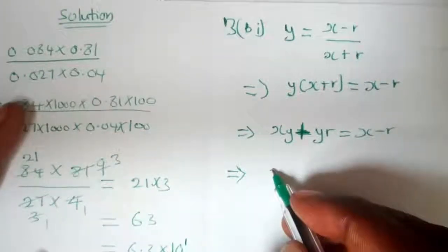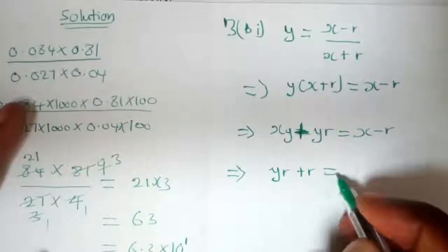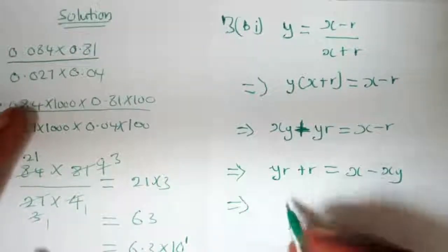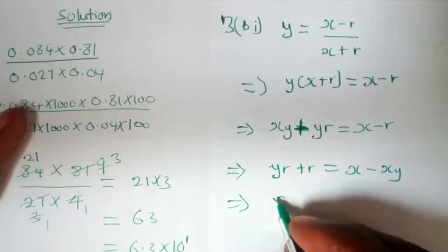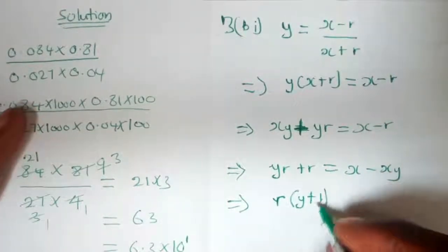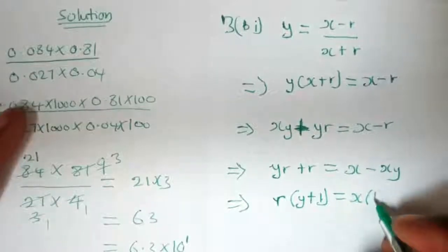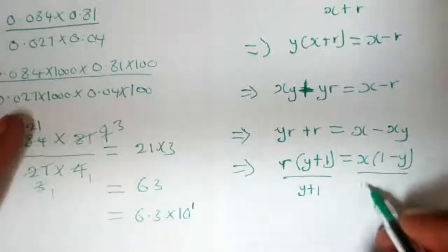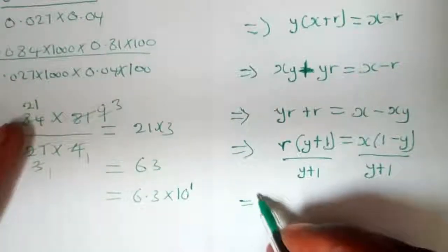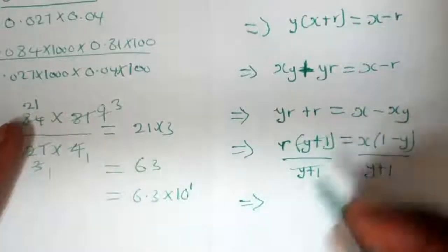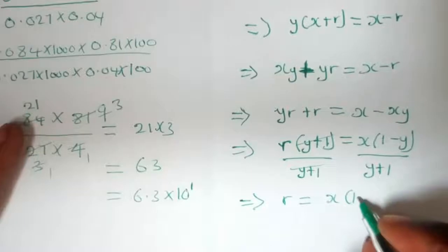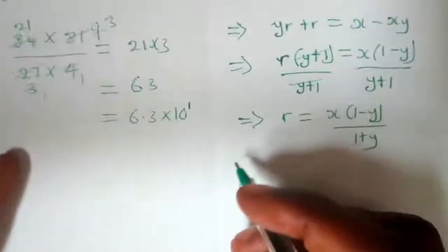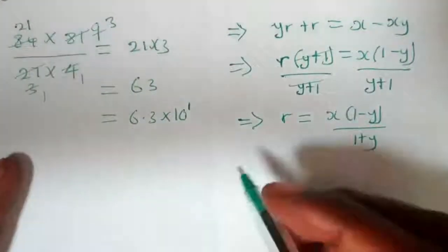We group the terms containing r on one side of the equation. We have yr here and r from the other side, so we factor out r: r into bracket (y plus 1) equals x times (1 minus y). Dividing both sides by (y plus 1) gives r equals x times (1 minus y) all over (y plus 1).